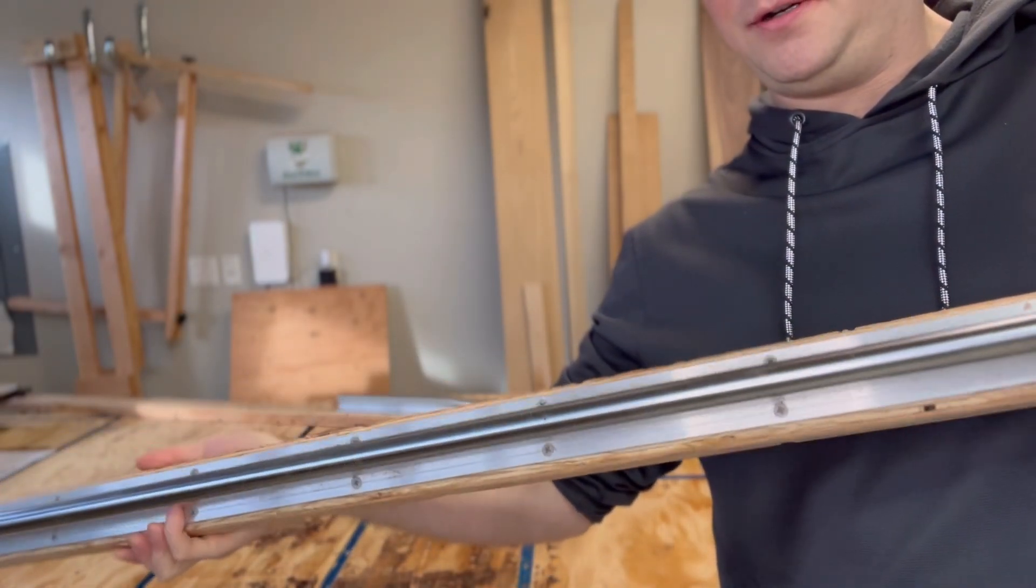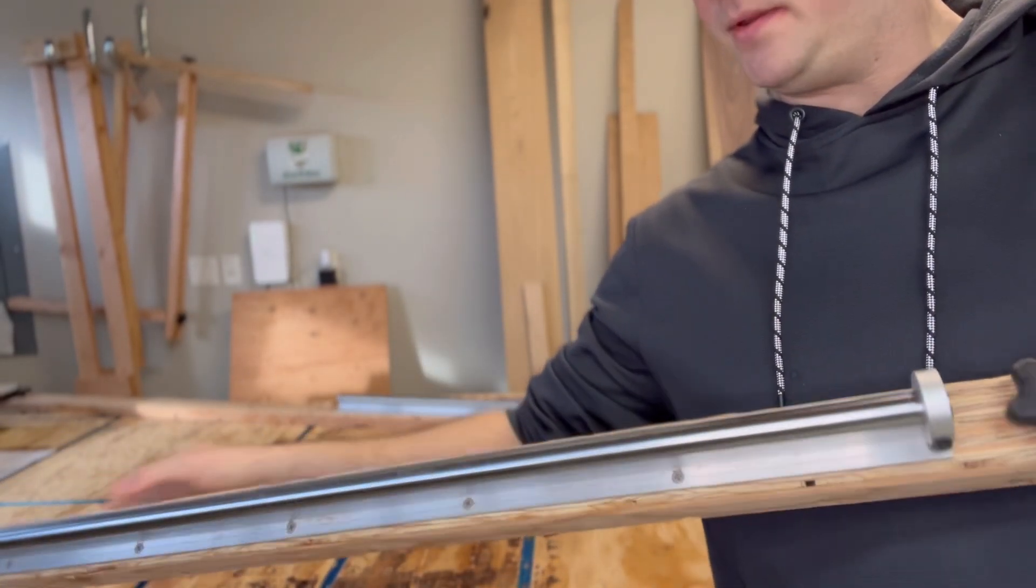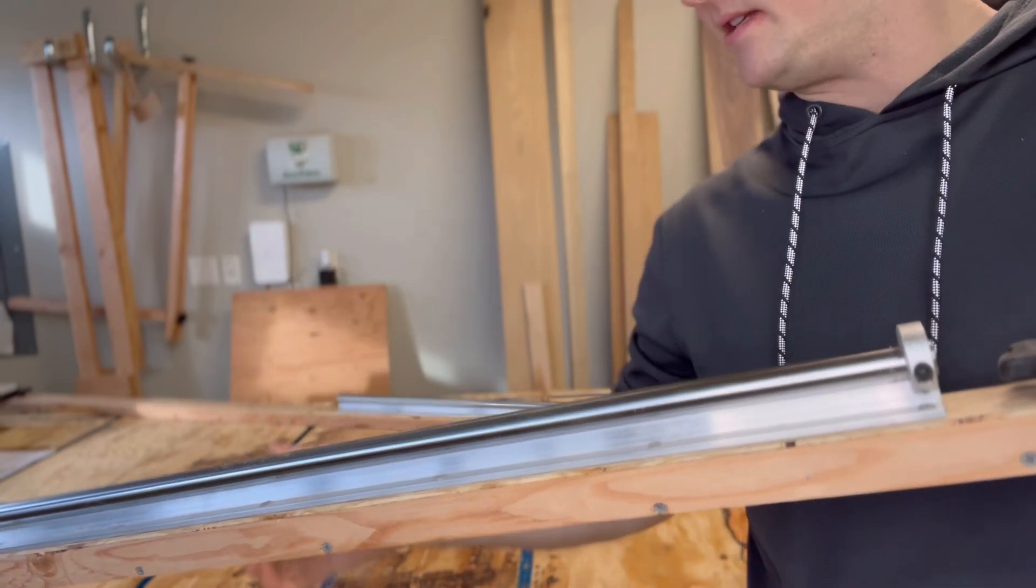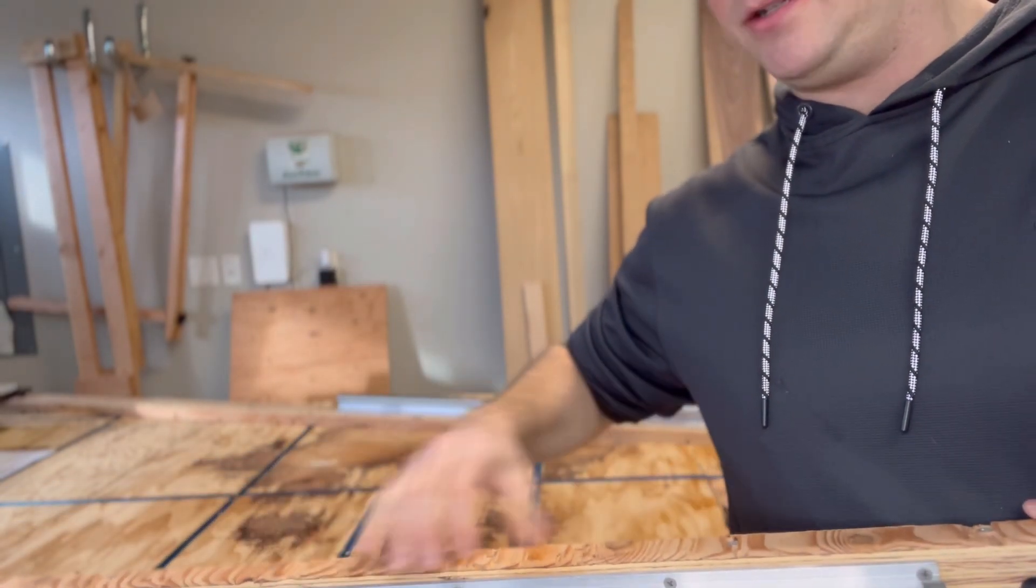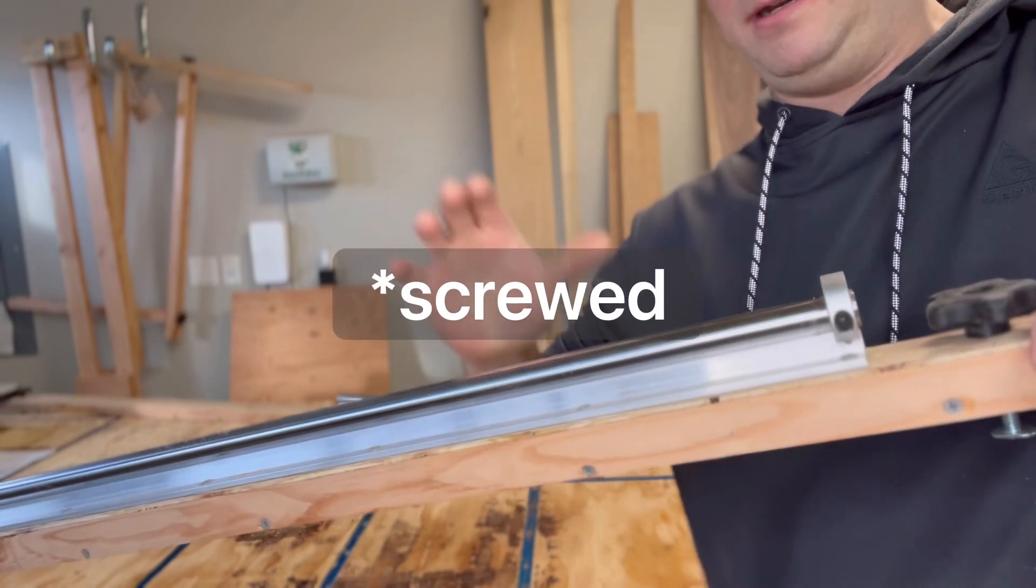When you order your router sled system, it's going to come with these rails. I'm not going to show you exactly how I assembled it, but long story short, I just took a completely flat board here and nailed it on.